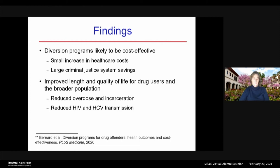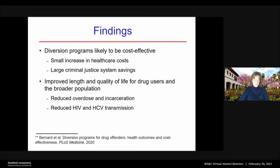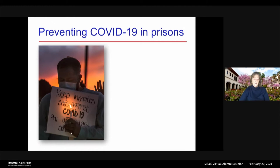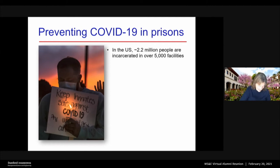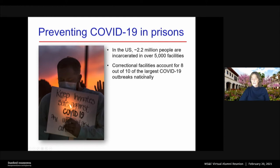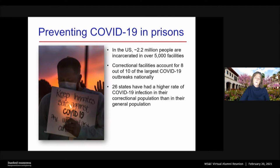Fundamentally, not only are diversion programs good from a social justice point of view, they're also good from a health point of view. We published this work this autumn in a journal called PLOS Medicine. Now to get to the two projects on COVID. The first project is about preventing COVID-19 in prisons. The US incarcerates more people per capita than any other country on earth — approximately 2.2 million people in over 5,000 facilities at any point in time. As you may have read in the news, there have been lots of outbreaks of COVID in jails and prisons.